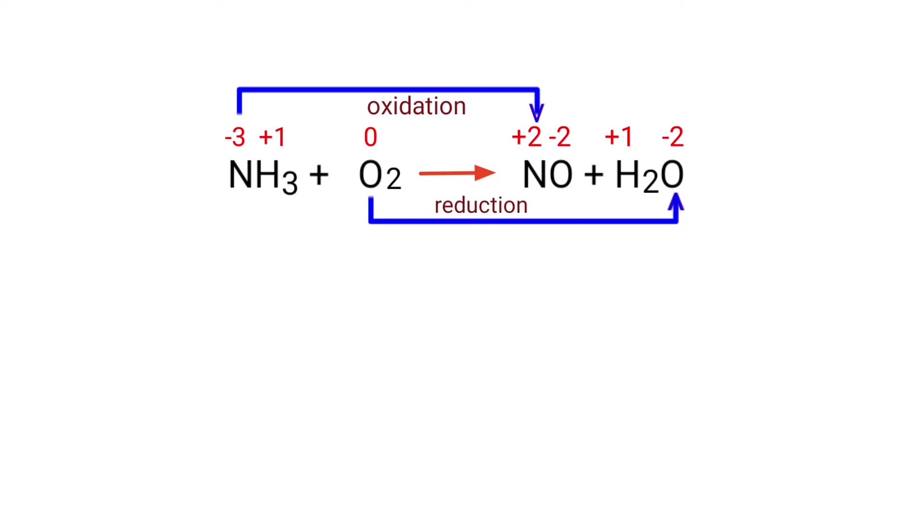In the oxidation state, the oxidation number increased by plus 5. In the reduction state, the oxidation number decreased by minus 2. In the O2 element there are 2 oxygen atoms, so the total decrease in oxidation number is minus 4.